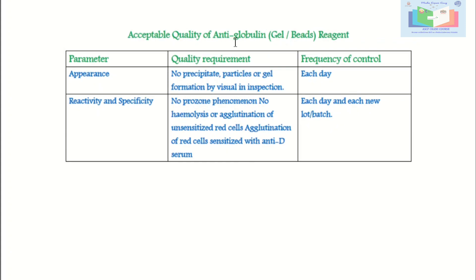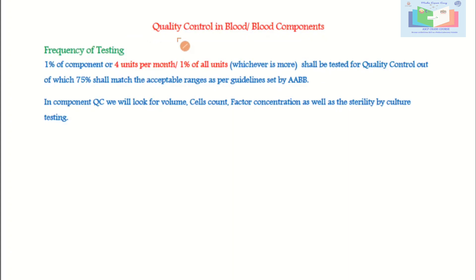Acceptable quality of antiglobulin gel or bead reagents: for appearance, there should be no precipitate, particles, or gel formation by visual inspection each day. For reactivity and specificity, there should be no prozone phenomenon, no hemolysis or agglutination of unsensitized red cells, but there should be agglutination of red cells sensitized with anti-D serum. This is checked each day and requires lot-to-lot verification.